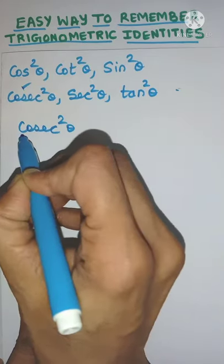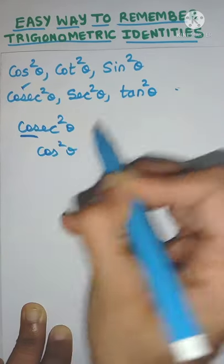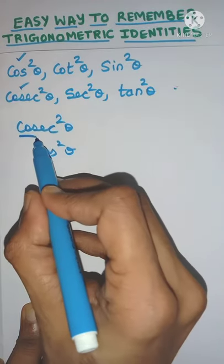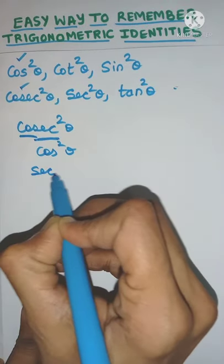Friends, did you see that from the first three letters you're getting cos square theta? So that's how you can remember, and from the last three letters you're getting sec square theta.